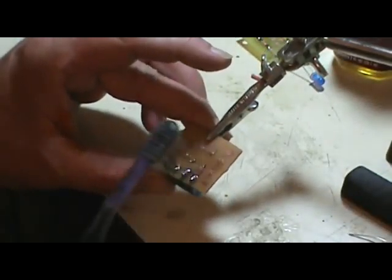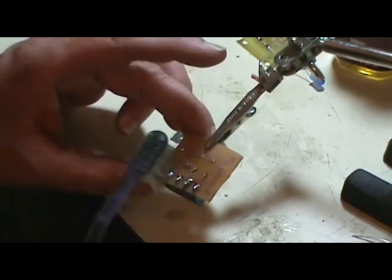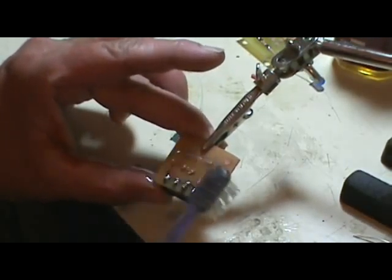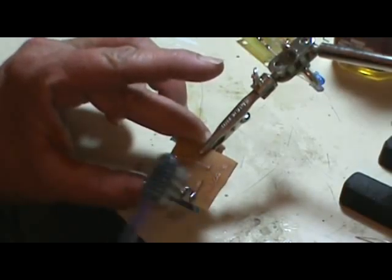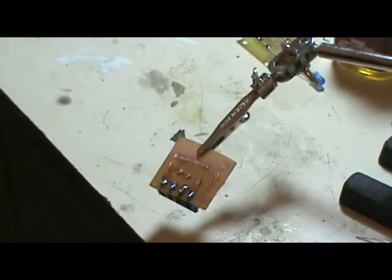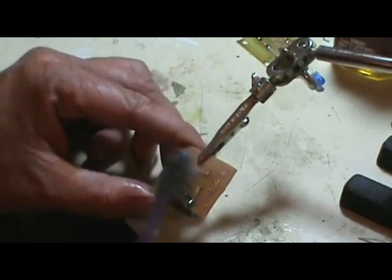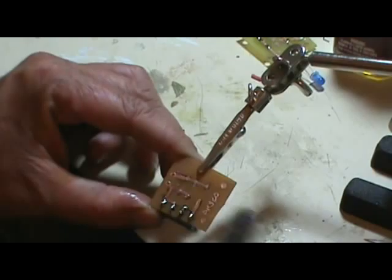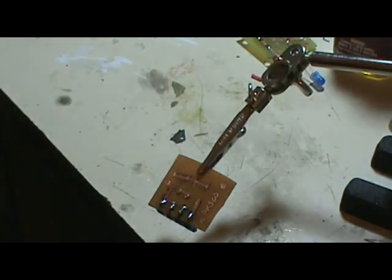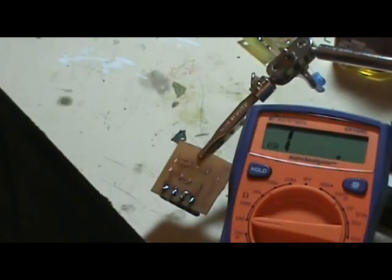Now after you get the solder on, clean it off with some alcohol to get the flux off. As I've mentioned before, flux is an oxidizer that will cause corrosion if you don't get it off. All we need is some alcohol for that. Another thing I like to do is to check I've got a good connection.